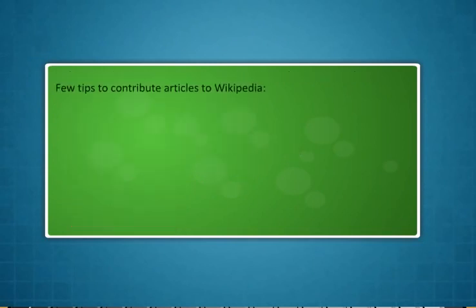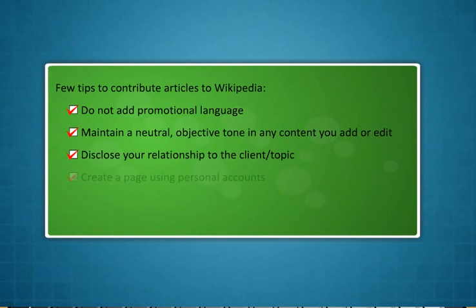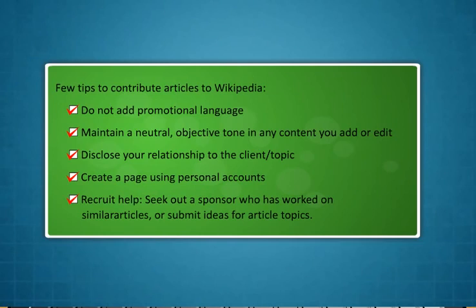Tips for contributing articles to Wikipedia: do not add promotional language; maintain a neutral, objective tone in any content you add or edit; disclose your relationship to the client or topic; create pages using personal accounts; and recruit help or seek out a sponsor who has worked on similar articles, or submit ideas for article topics.